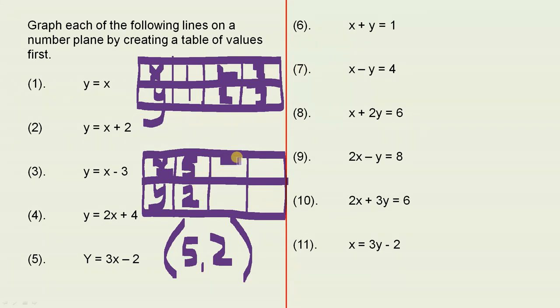Let's say the x value was 7. y equals 7 minus 3. That gives you 4. So that gives you the point 7, 4.